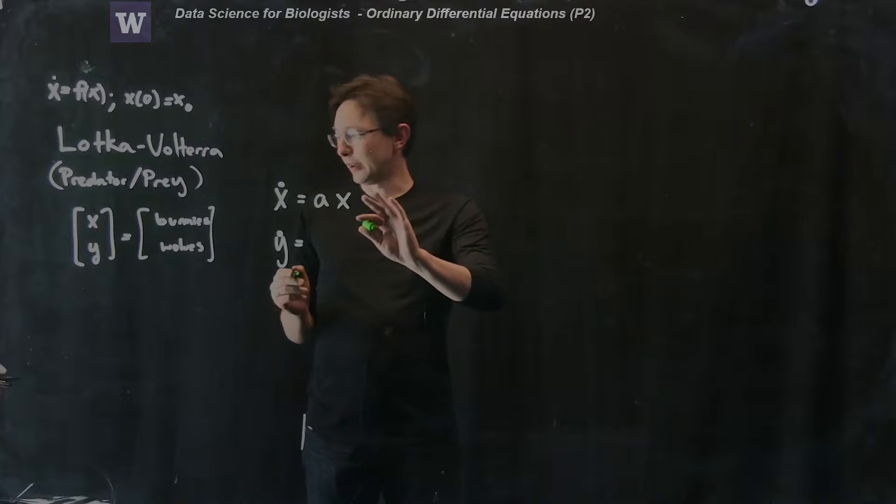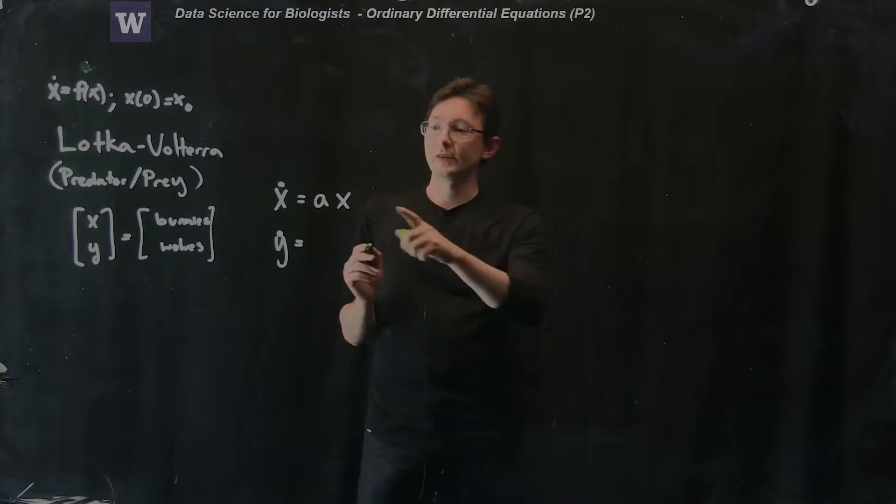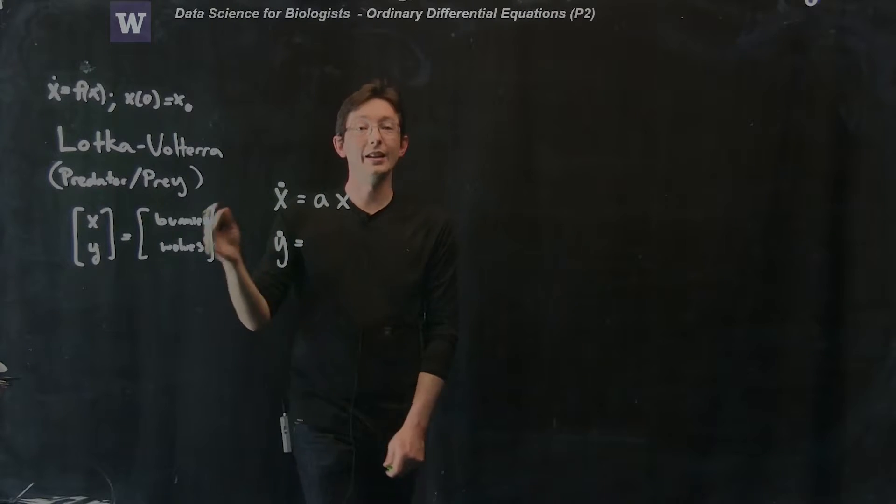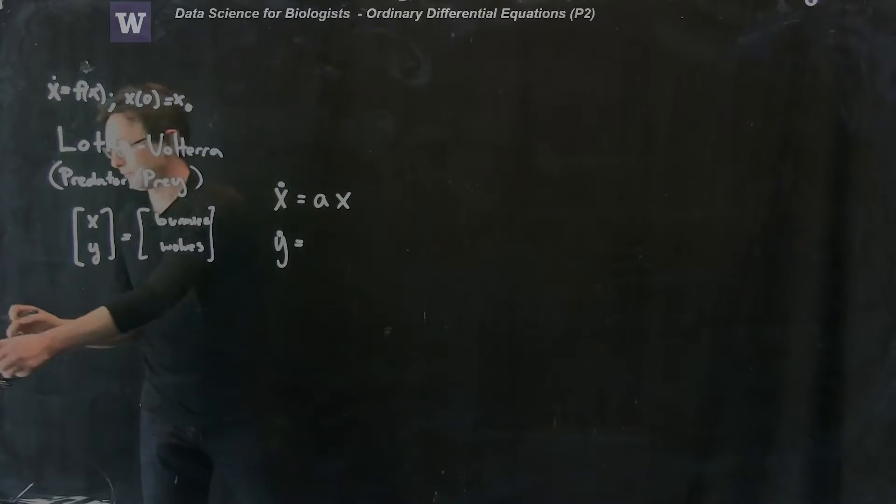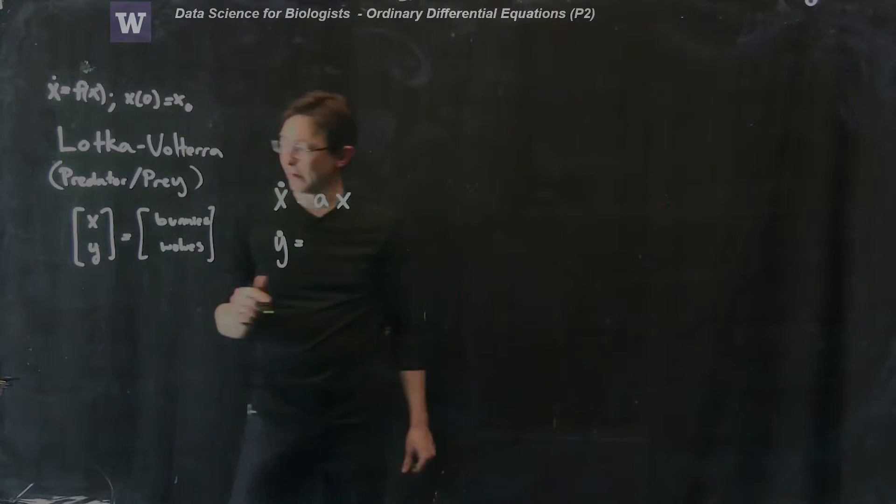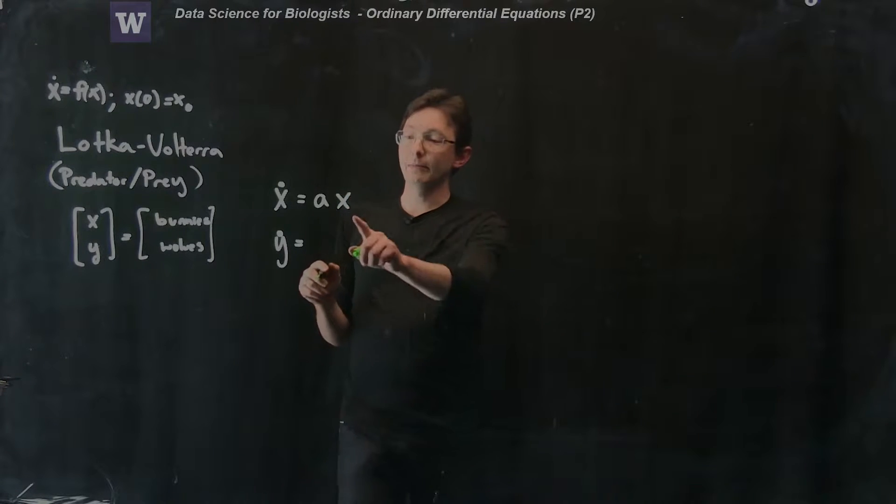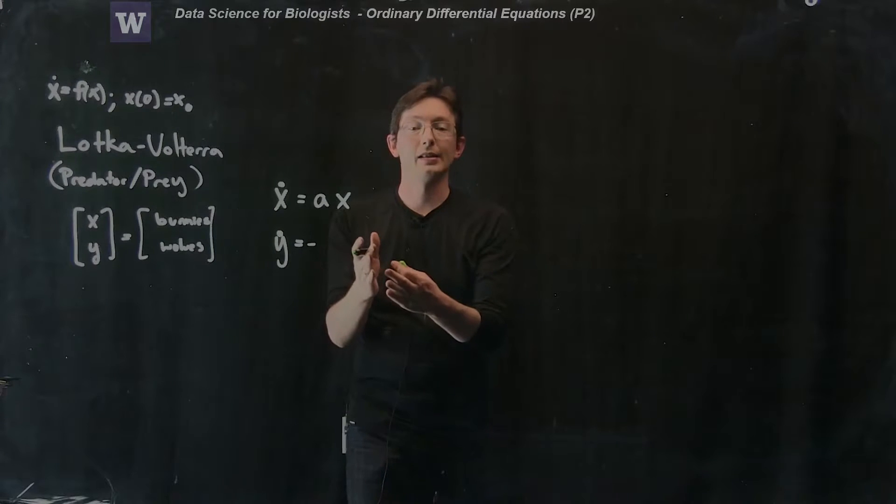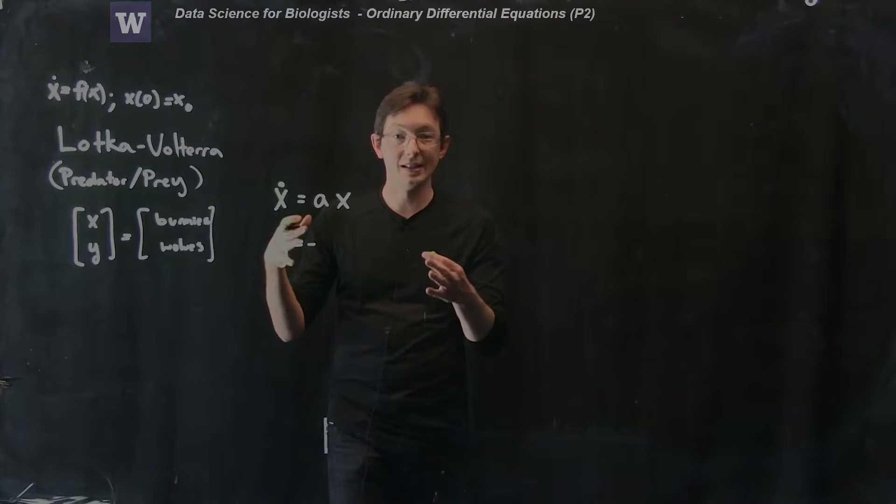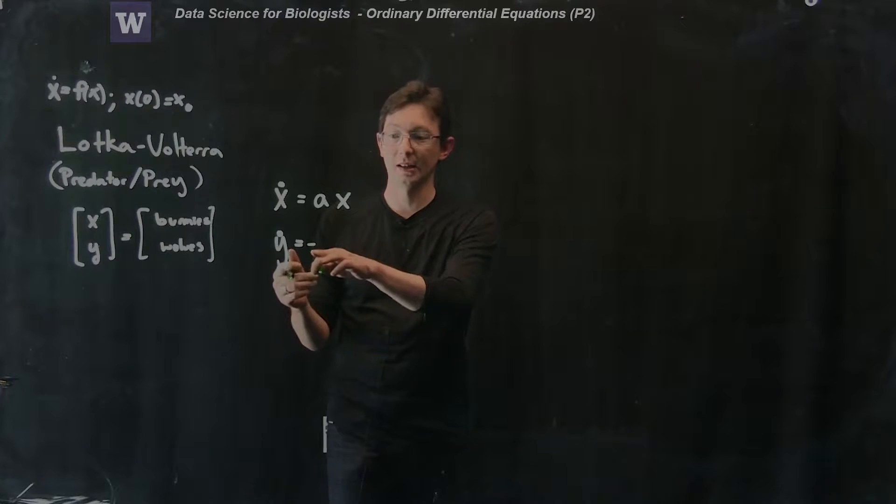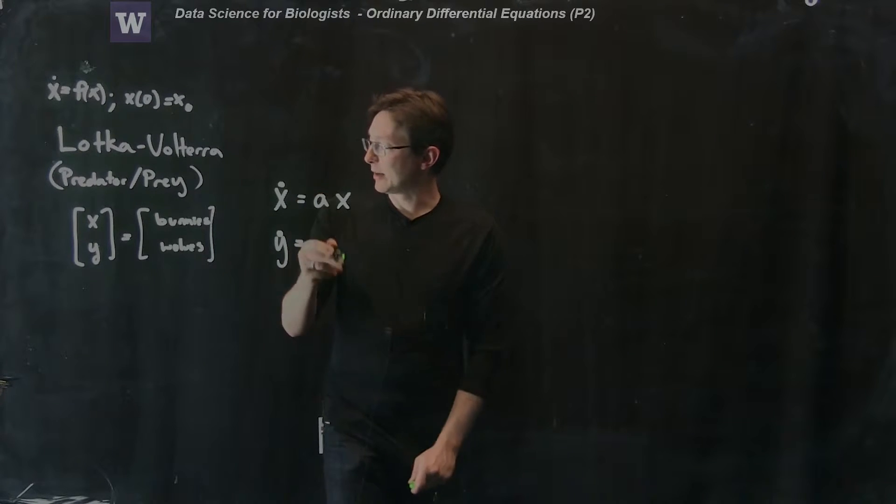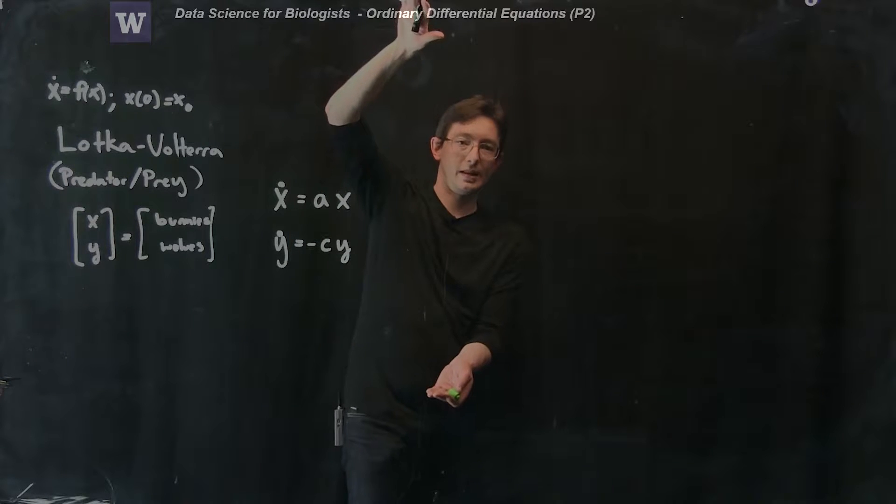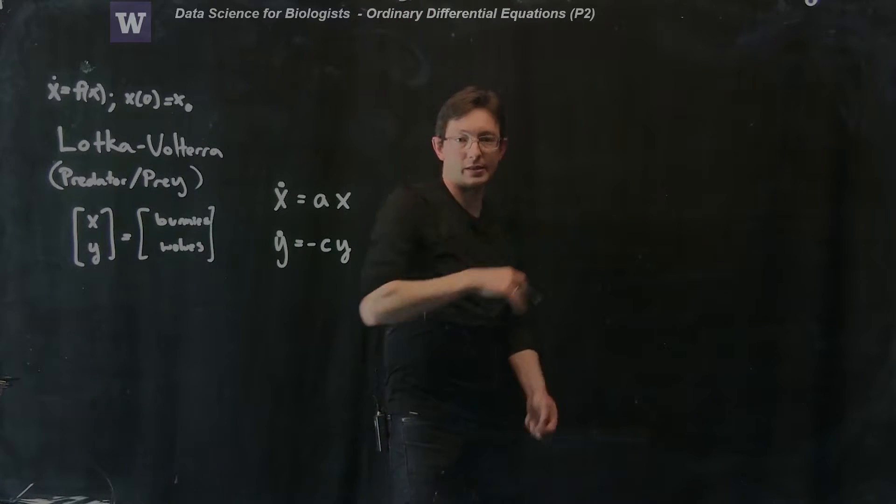Without any wolves, without any bunnies, the solution would just be exponential growth at some rate e to the AT. And in the absence of any bunnies, we're going to say that our wolves just decay at some constant rate, so the population of wolves decreases at a negative rate equal to minus C times Y. This corresponds to exponential decay eventually going to zero.